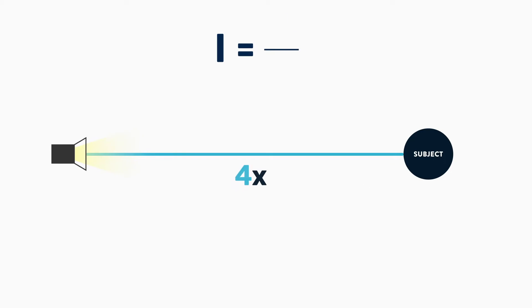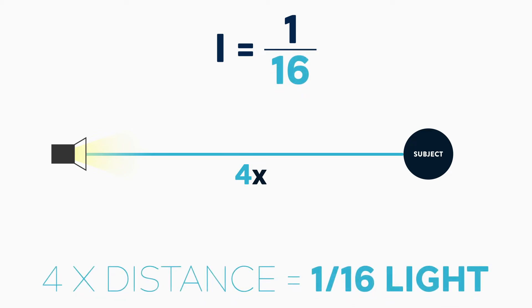Let's do one more to really cement this. Let's say we want to quadruple the distance of our light away from our subject, so d becomes 4. That means our equation is 1 over 4 squared, or one sixteenth the original light intensity. From just these few examples you can see how quickly and dramatically light falls off as you move it further and further away from your subject.